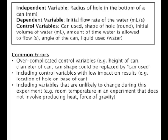In the water can example, the independent variable was the radius of the hole in the bottom of a can, and the dependent variable was the initial flow rate of the water. The control variables were: the can used, the shape of the hole (round), the initial volume of water, the amount of time the water is allowed to flow, the angle of the can, and the liquid used (water). Notice that the dimensions of the can were not individually specified but were encompassed in 'can used.' Variables of little importance, such as the height of the can above the ground and the location of the hole in the bottom, were not included. Variables unlikely to change, such as the force of gravity and room temperature, were also not included.